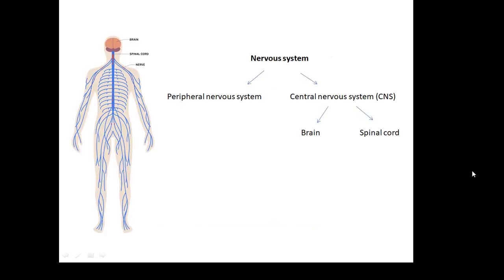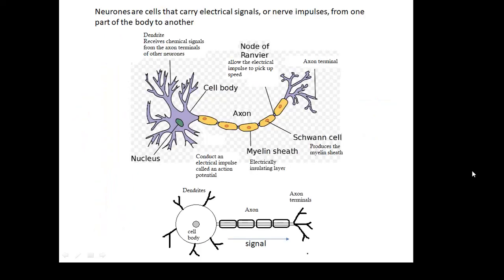Your nervous system is made up of your peripheral nervous system and your central nervous system, your CNS. Your central nervous system is your brain and your spinal cord — central as in in the middle. The peripheral nervous system receives and sends messages from the CNS. A neurone is a nerve cell and they're like the electrical wires that carry the signals — electrical signals, nerve impulses, or action potentials — from one part of the body to the other.